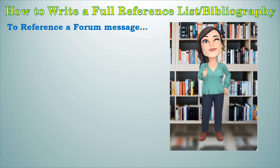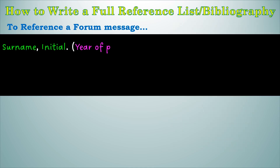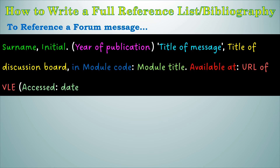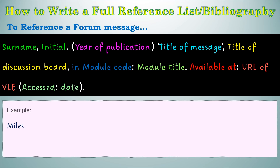To reference a discussion board on a VLE (Virtual Learning Environment), you need: the surname of the forum member, comma, initial, full stop, open brackets year of publication, close brackets, then open quotations, title of the message, close quotations, comma, then the title of the discussion board, comma, 'in' and then the module code, colon, the module title, full stop, then 'Available at:' colon and the URL of the VLE, and then open brackets 'Accessed:' and the date you accessed it, close brackets and full stop. Here's an example of what that might look like.